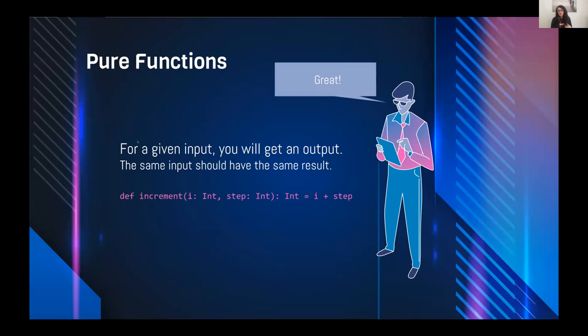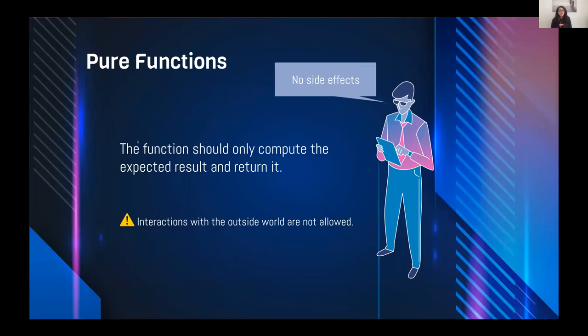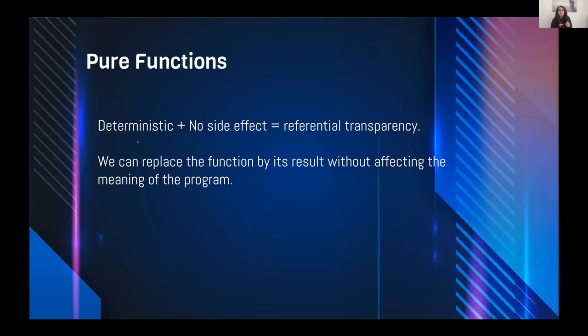To make it deterministic, we should either always increment by one (i + 1) or, if we want to increment by different amounts, add it as an argument so we can test it more easily. Also importantly, a pure function should have no side effects — a function's computation should use only its inputs to provide results and not interact with the outside world.